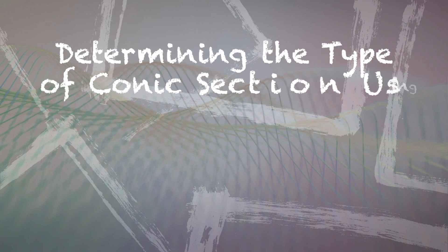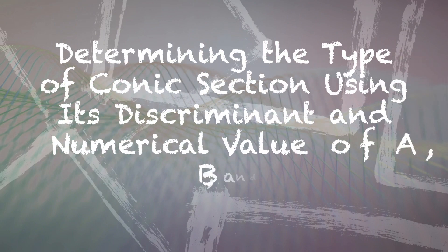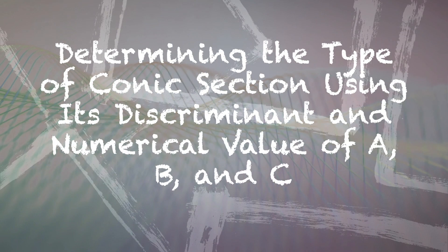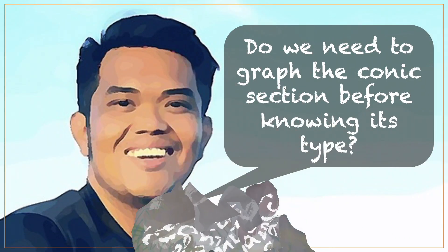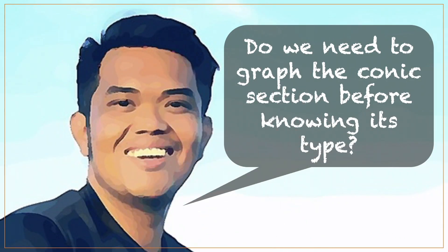In this video, you will learn how to determine the type of conic section by solving for its discriminant and satisfying some conditions before making a conclusion. We will enumerate these conditions later. Let's start this video with a question: do we need to graph the conic section before knowing its type?